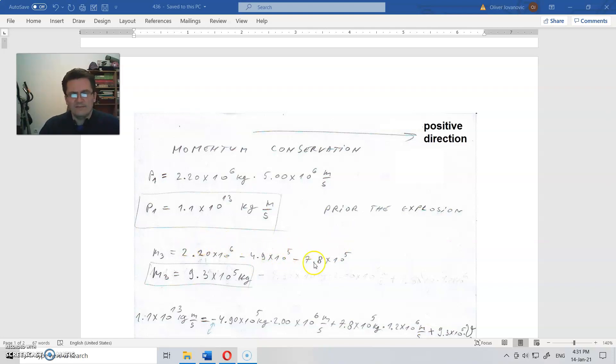So overall mass minus masses of the other two pieces. We will get the mass of the third piece, that was 9.3 times 10 to the 50 kilograms.